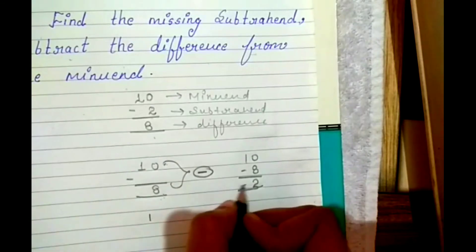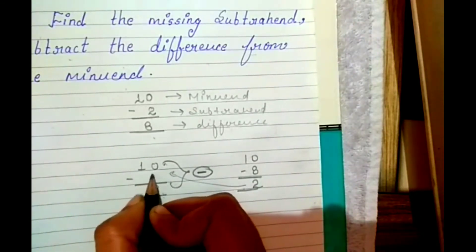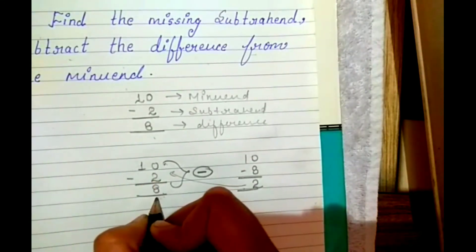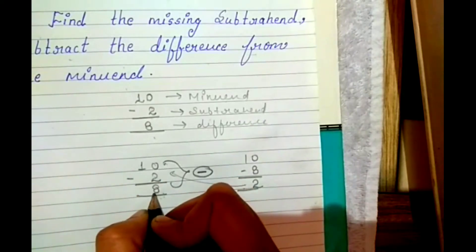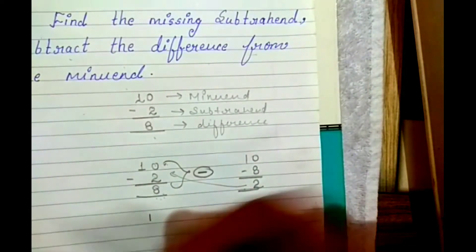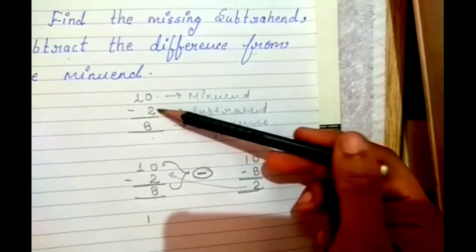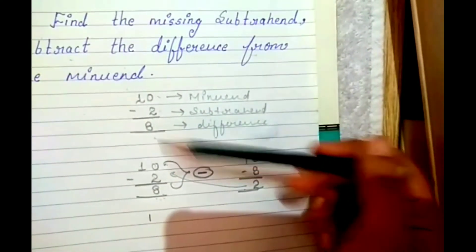That means आपका subtrahend 2 है। 10 में से 2 minus करने पर 8 आ जाएगा। सबसे पहले आपको ये knowledge होना चाहिए कि ये minuend है, ये subtrahend और ये difference है।